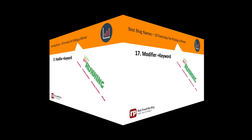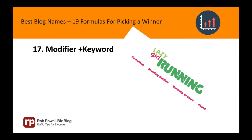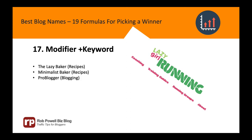Formula 17: A modifier word plus your keyword. If you're a baker, what kind of baker? What kind of fashionista, vegan, or gardener? Here are some examples: The Lazy Baker, Minimalist Baker, Pro Blogger, Smart Blogger, Lazy Girl Running.